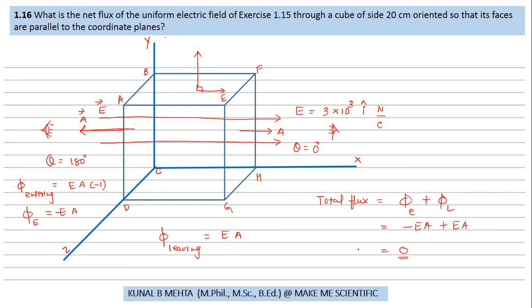Now the short trick is, guys, whenever the electric field lines coming in is equal to electric field lines coming out, the net flux is always zero.